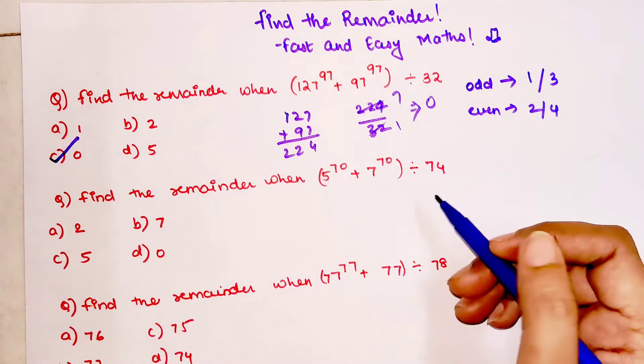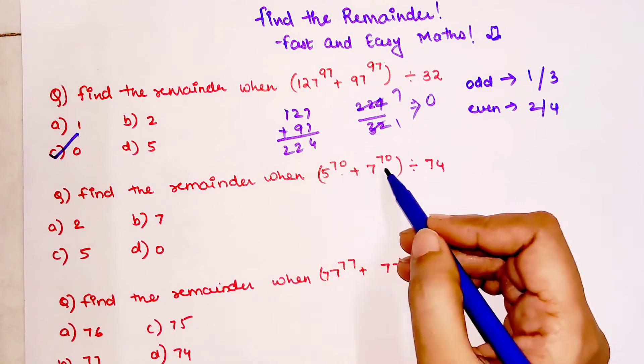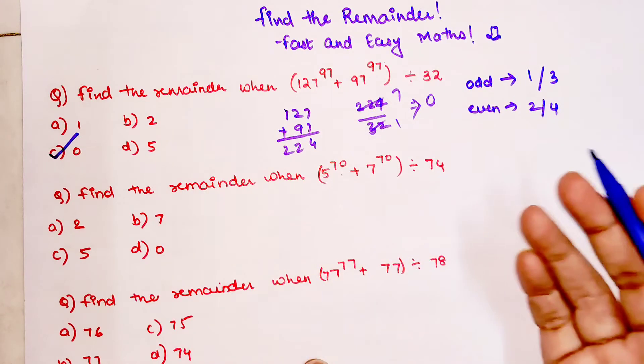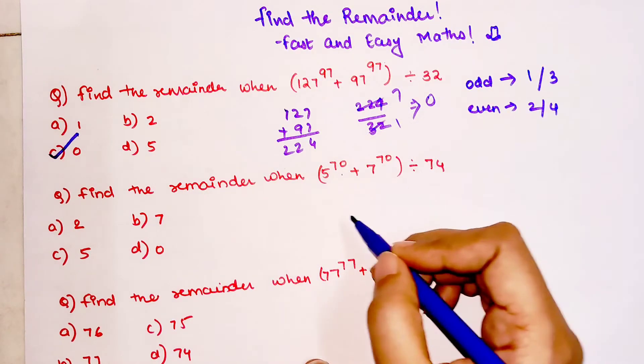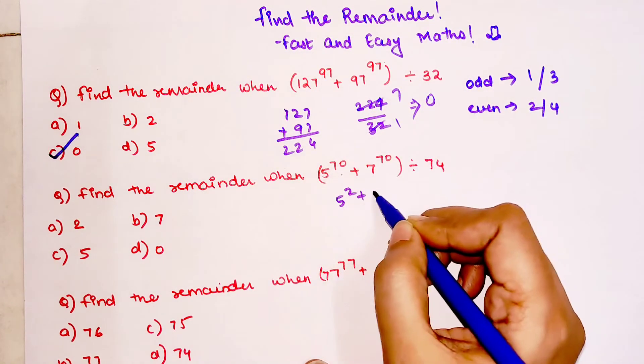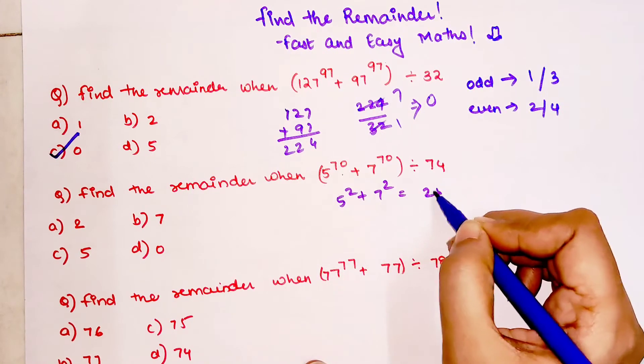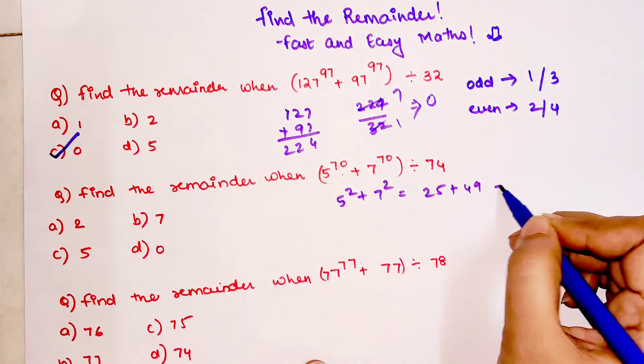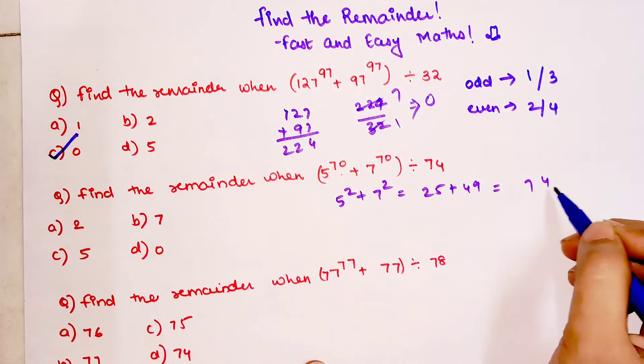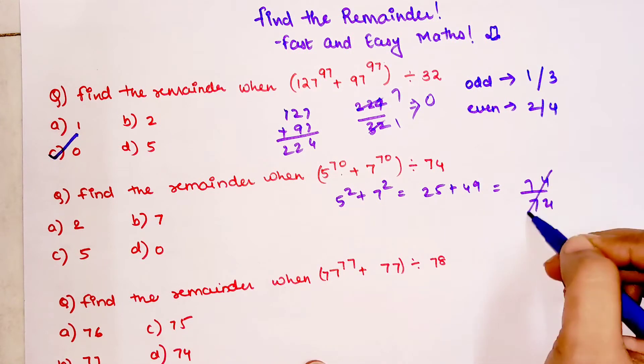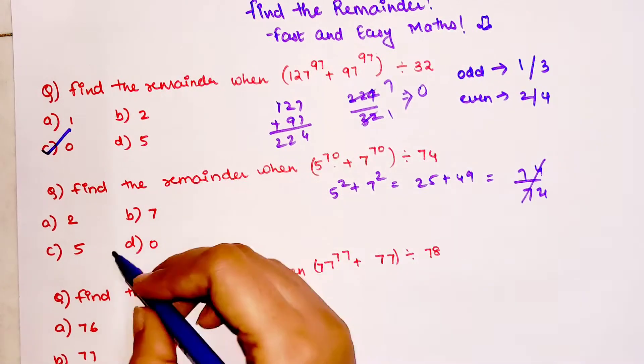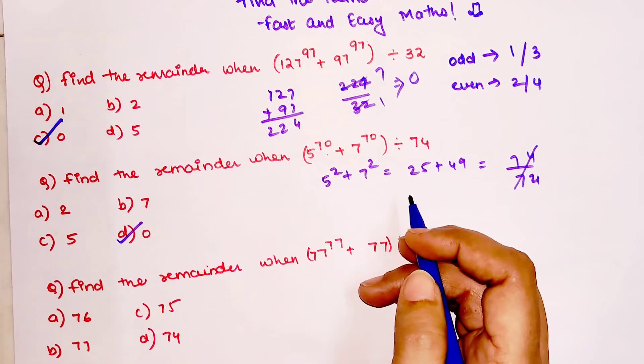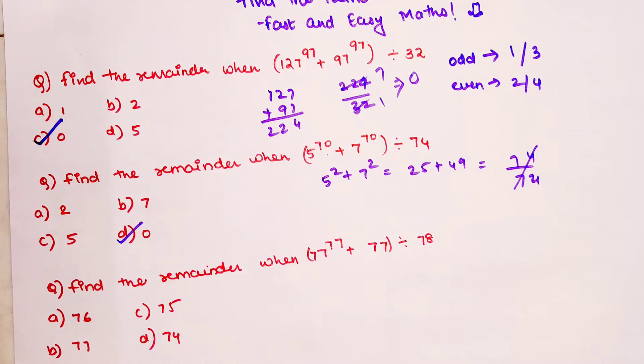Very quickly, let's look at the next one. We have a power which is 70 and 70, so again it is raised to an odd power. So we will make it 5 squared plus 7 squared. That gets you 25 plus 49, which is 74. Now, 74 divided by 74 is completely divisible. So here also, option D is my answer where the remainder is 0.